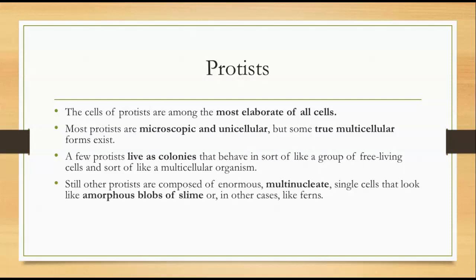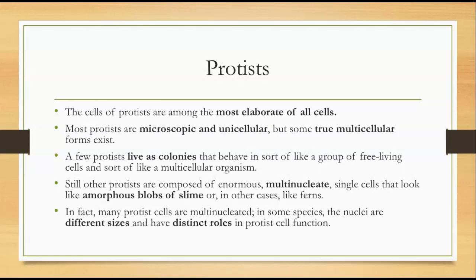Other protists are composed of enormous, multinucleate single cells that look like amorphous blobs of slime, or in other cases they look like ferns. Many protist cells are multinucleated, meaning that for one cell there is more than one nucleus. In some species the nuclei are different sizes and they have distinct roles in the protist cell function.